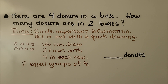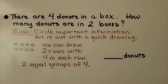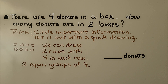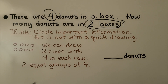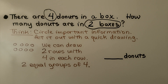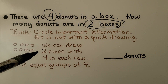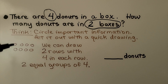There are four donuts in a box. How many donuts are in two boxes? We can circle the important information and act it out with a quick drawing. There are four donuts in a box and there are two boxes. We draw two rows with four in each row — two equal groups of four. That would be eight donuts.